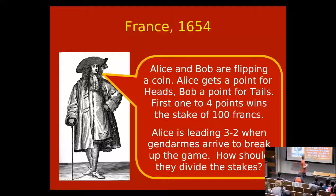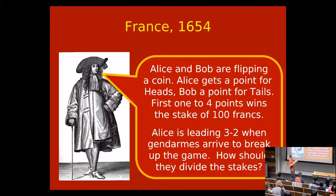He eventually got a professional mathematician to assist him. He also asked what is called the most famous problem in the history of probability — the problem of points. Two people competed with coin flips: Alice gets a point for heads, Bob gets a point for tails, and first to four points wins. Imagine Alice is winning 3–2 and the police come and you have to stop the game. How should they split up the wager? This was a serious question.